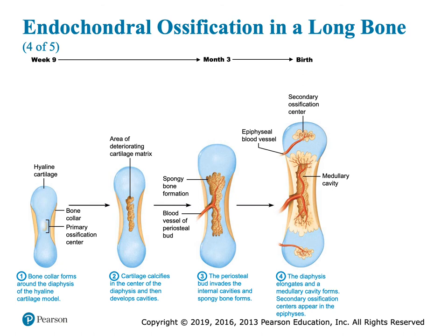At birth, that diaphysis — the shaft — has gotten pretty long, and we have a small medullary cavity. The cavity is not as big as in an adult. Some blood vessels are also going to deposit a new bony area — a secondary ossification center — on the ends of the bones.